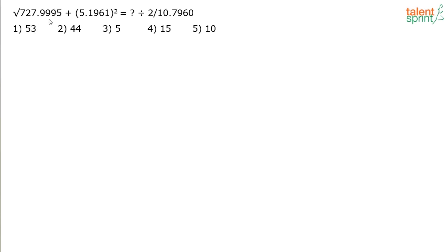The question is: square root of 727.9995 plus 5.1961 squared, equals question mark divided by 2 by 10.7960. The options are 53, 44, 5, 15, and 10.